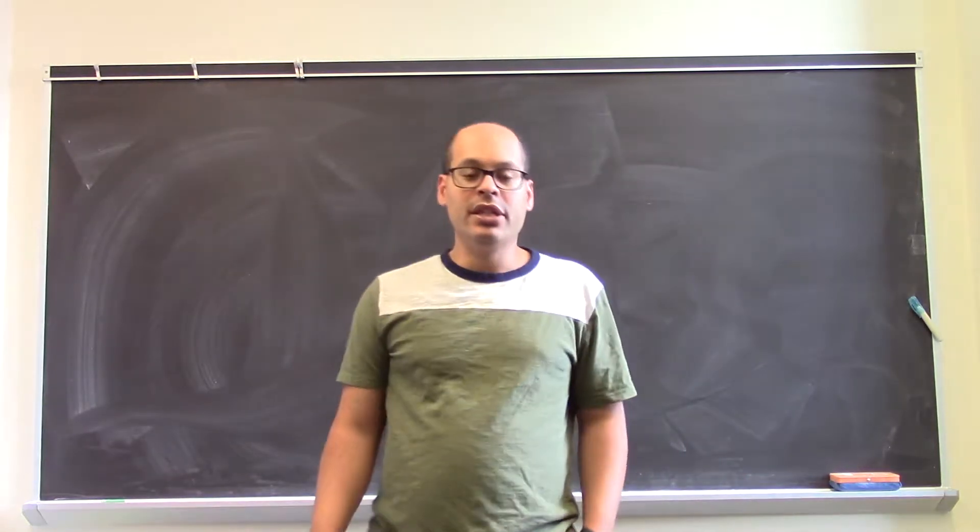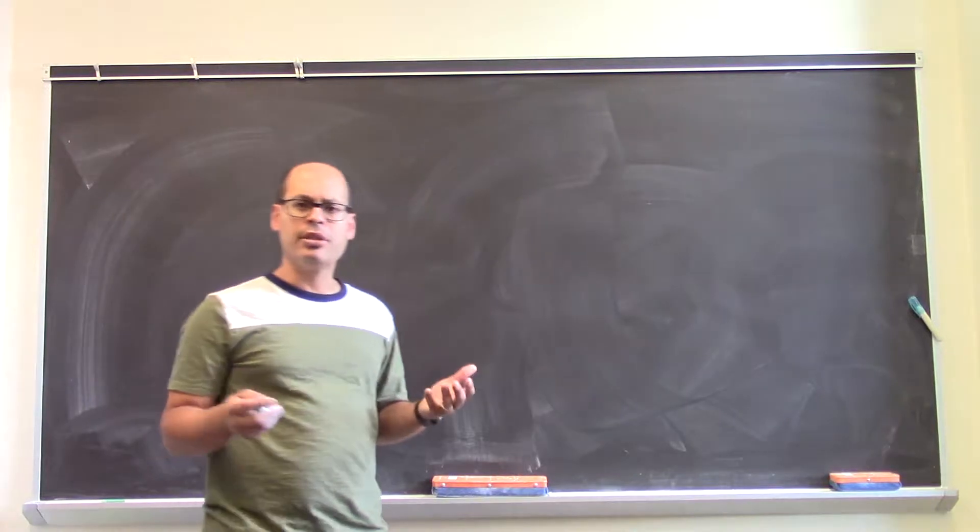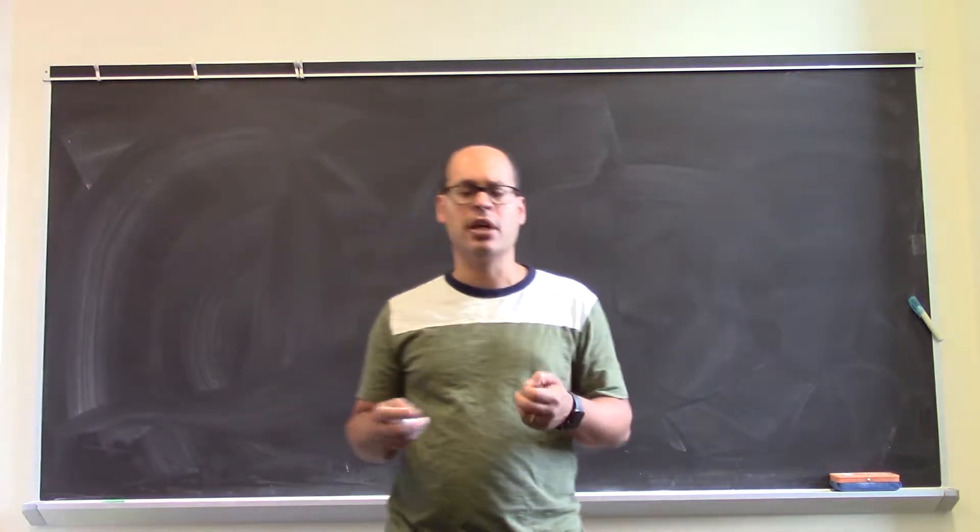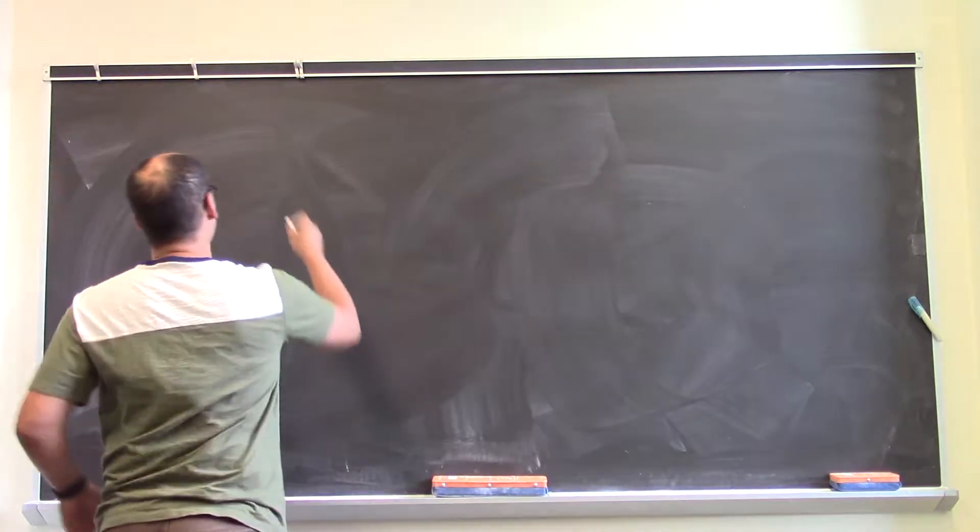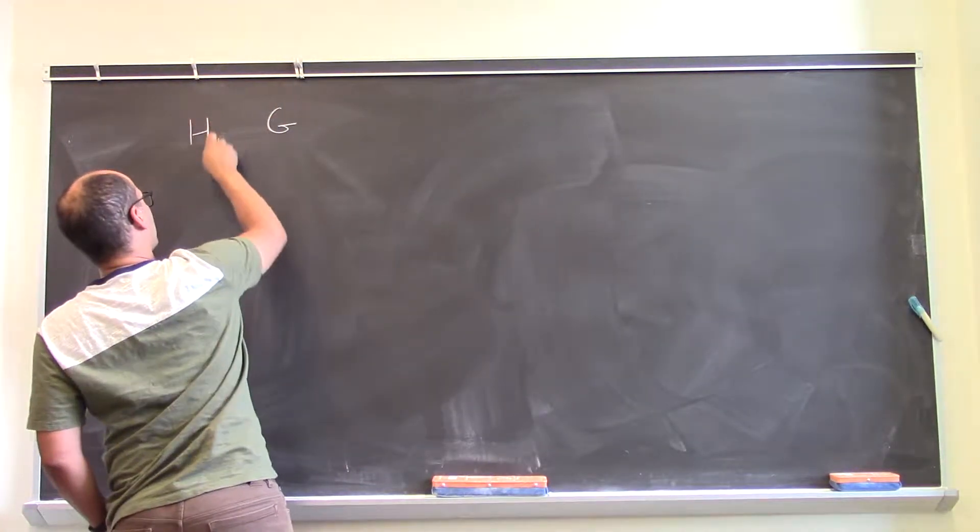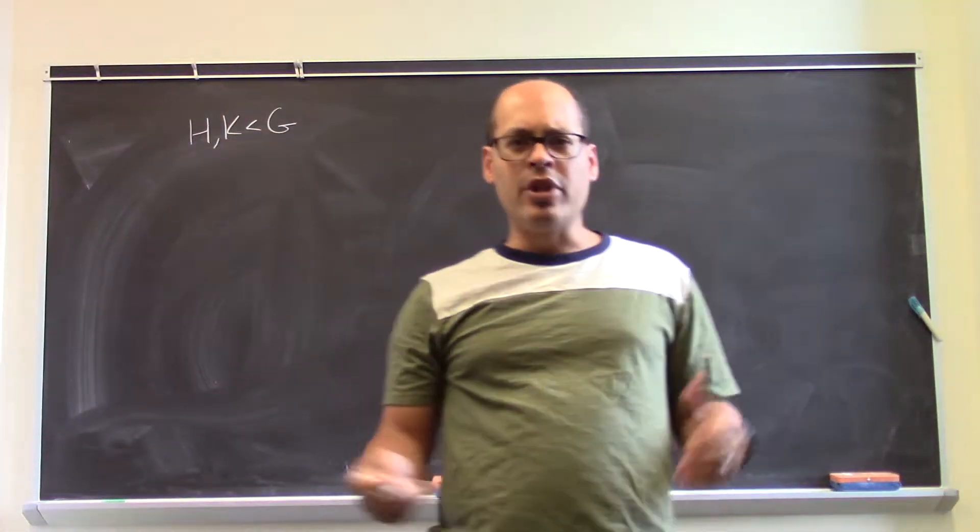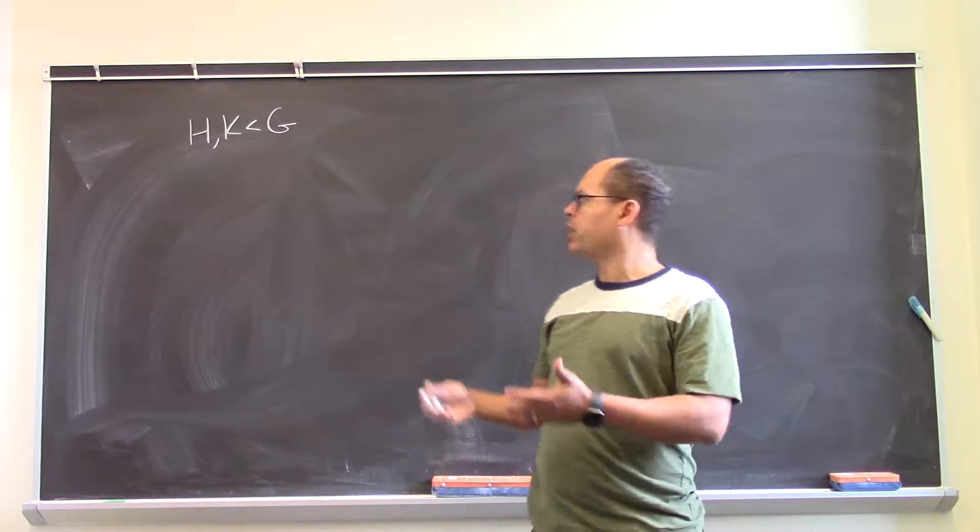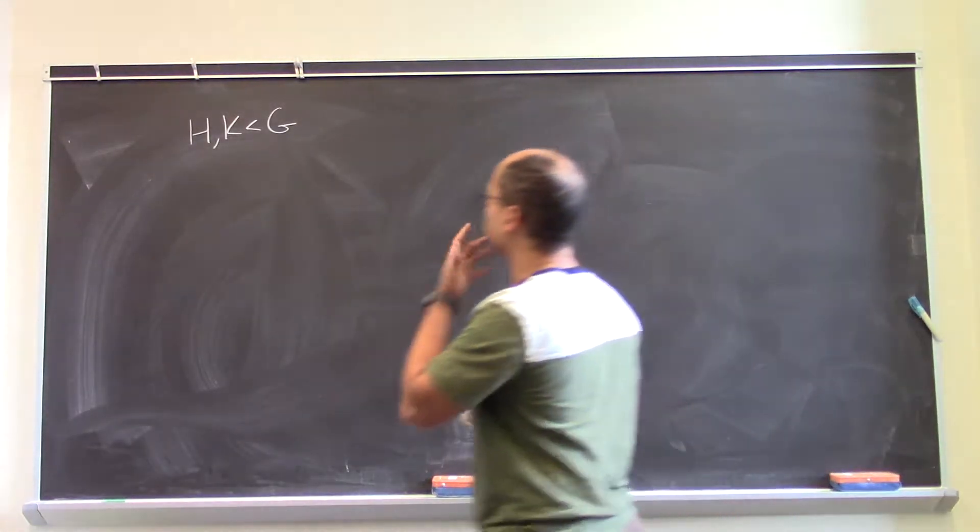The main theme in group theory is to take a group and try to understand it in terms of simpler parts, in particular its subgroups. So it's natural to ask the question of, given a group and given a couple of subgroups of that group, how can we fit these subgroups together to make maybe a bigger subgroup of G?